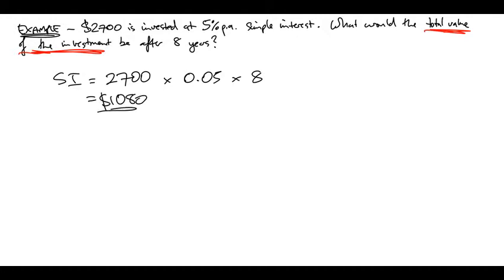But just remember that is the simple interest, that is the fee, that is what they get on top. If they've invested 2,700 dollars, they've still got that. They're just getting the interest on top of that. So the whole investment, therefore total value of the investment...